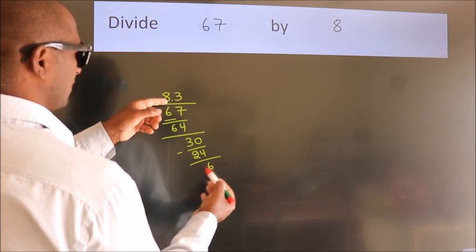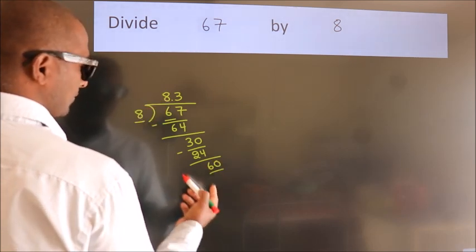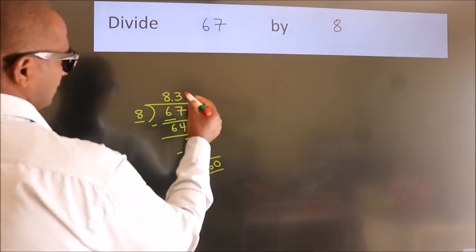We already have the decimal, so we directly take 0, making 60. A number close to 60 in the 8 table is 8